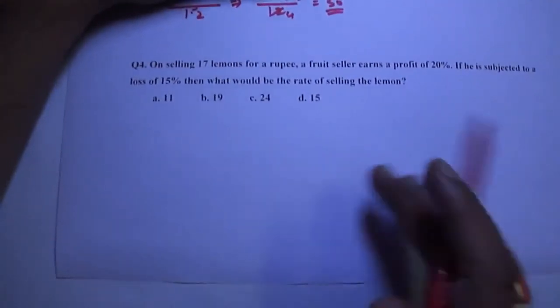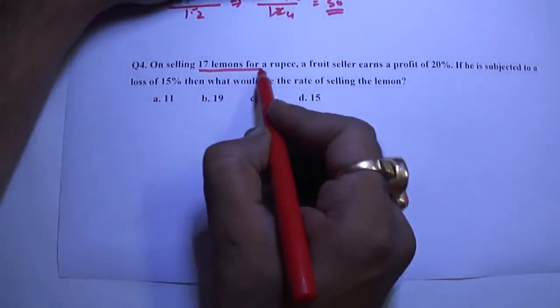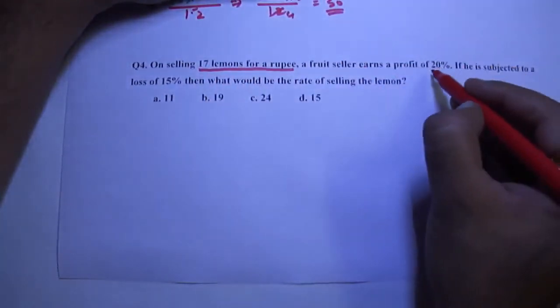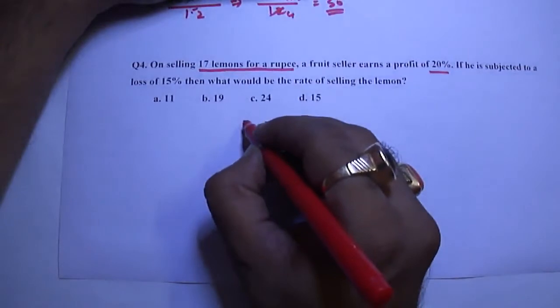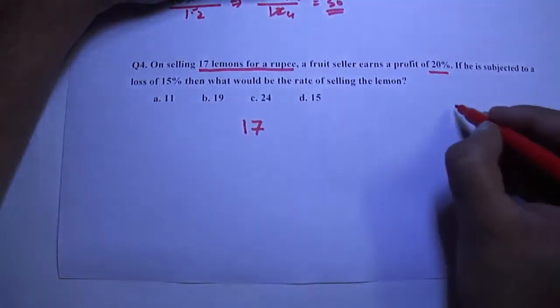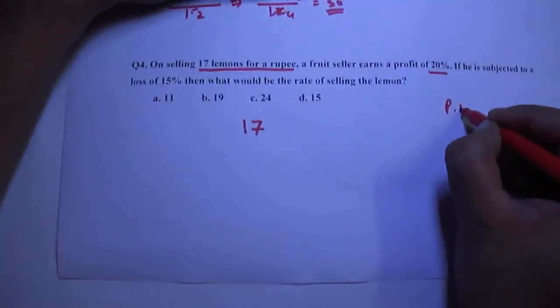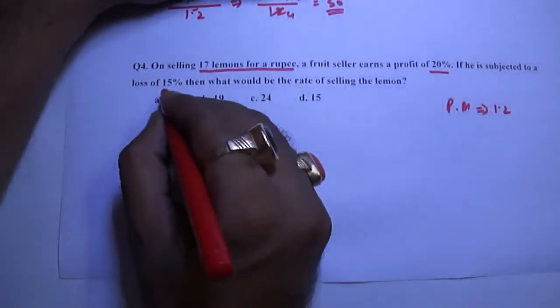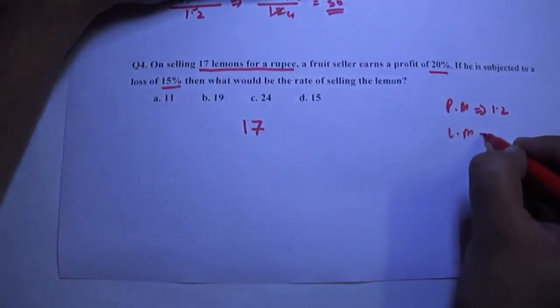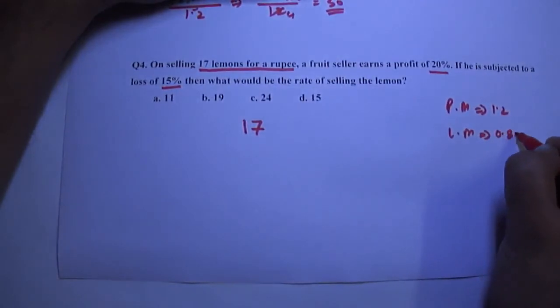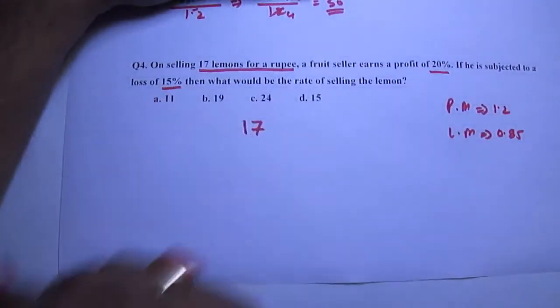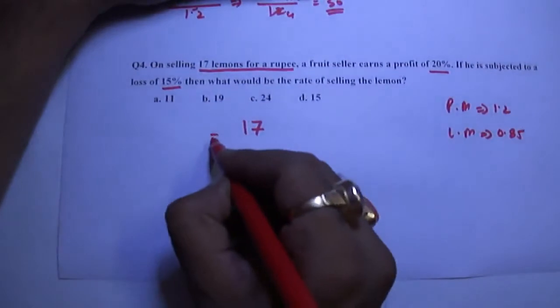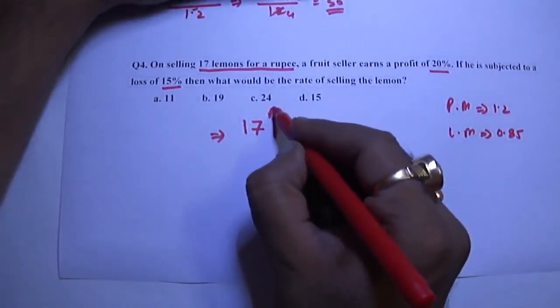One more example. On selling 17 lemons for a rupee, a fruit seller earns a profit of 20%. Our quantity is 17. Profit multiplier is 1.2. If he is subjected to a loss of 15%, the loss multiplier is 0.85. He wants to earn a loss, so he has to increase the number of lemons.